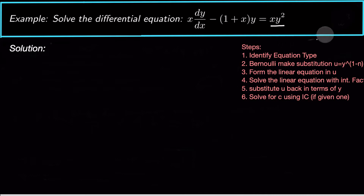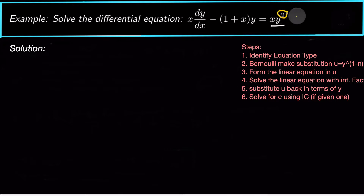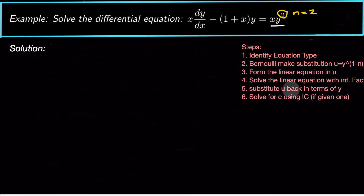To solve a Bernoulli differential equation, I usually follow these steps: identify it as Bernoulli, then make a substitution u equals y to the 1 minus n, where n is the exponent on y. Here n equals 2. Then form the linear equation, solve it with the integrating factor, substitute u back in terms of y, and solve for C if we have an initial condition. In this case we don't, so we'll leave the solution in general form.